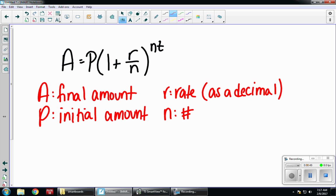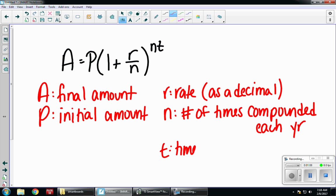N is the number of times compounded each year. So if it's compounded daily, it would be 365. If it's compounded monthly, it would be 12. Weekly would be 52. And then T is the time in years.